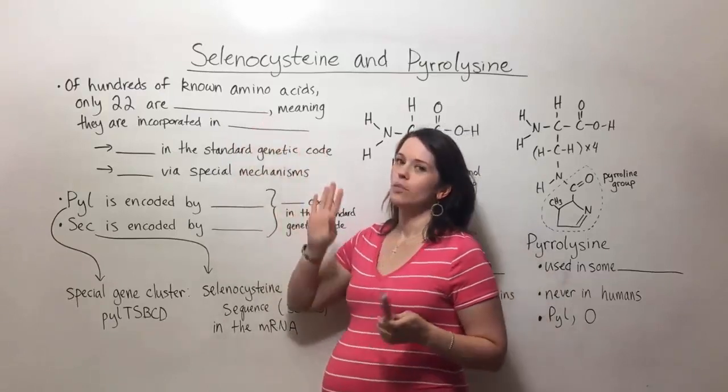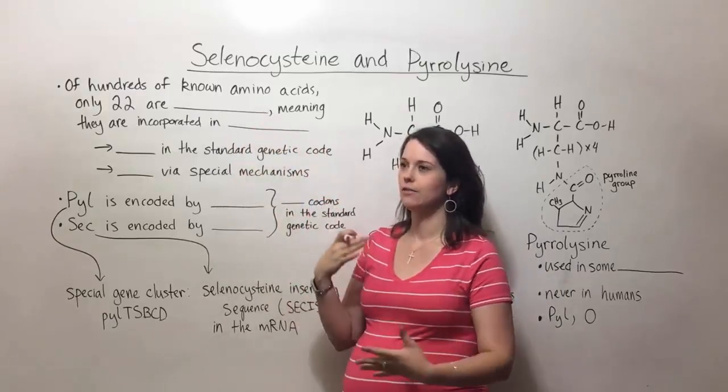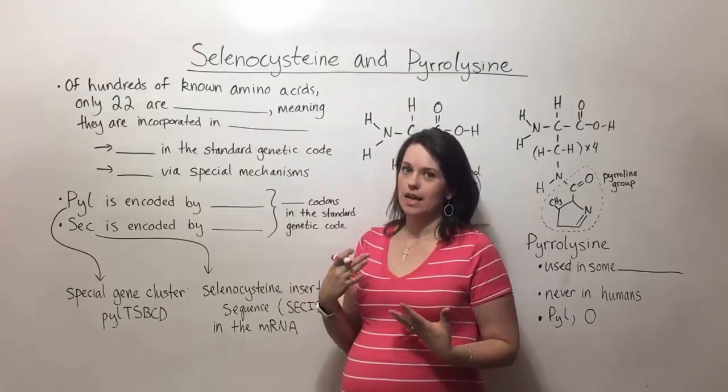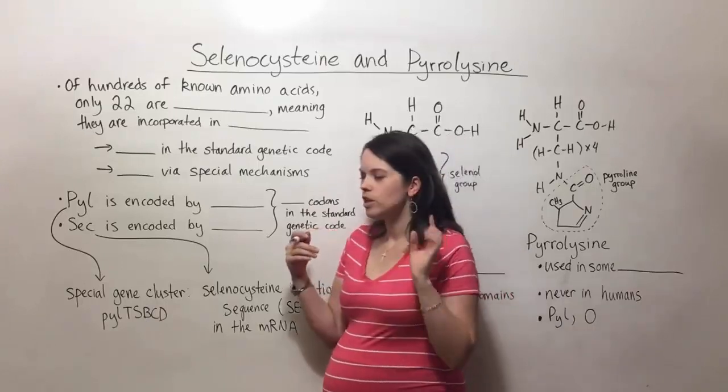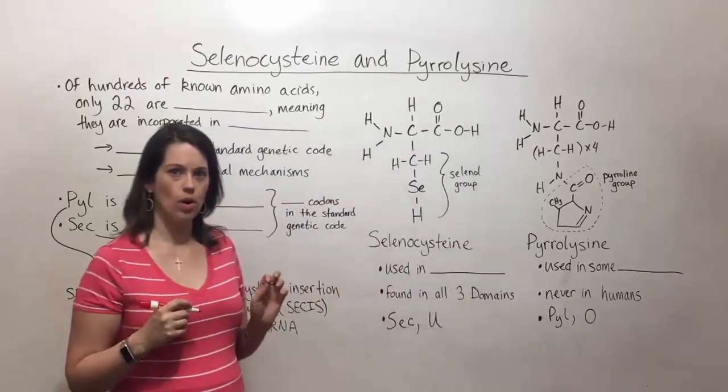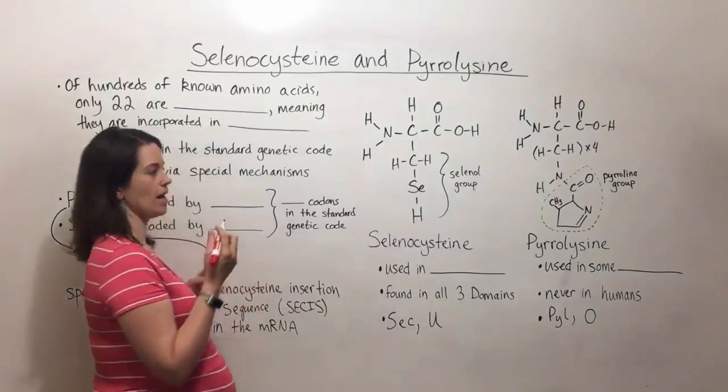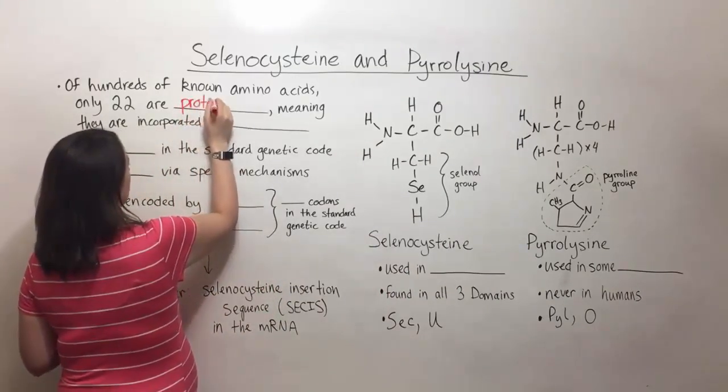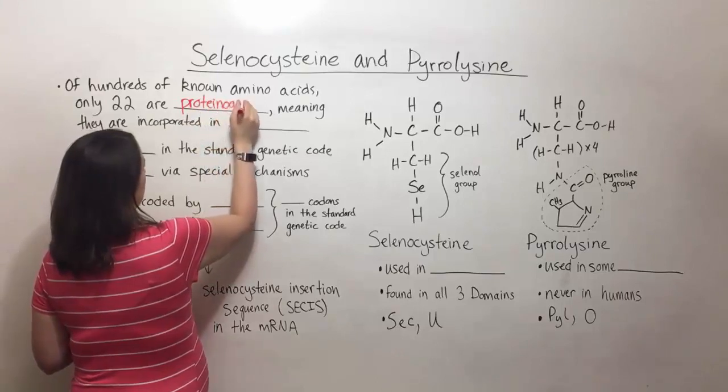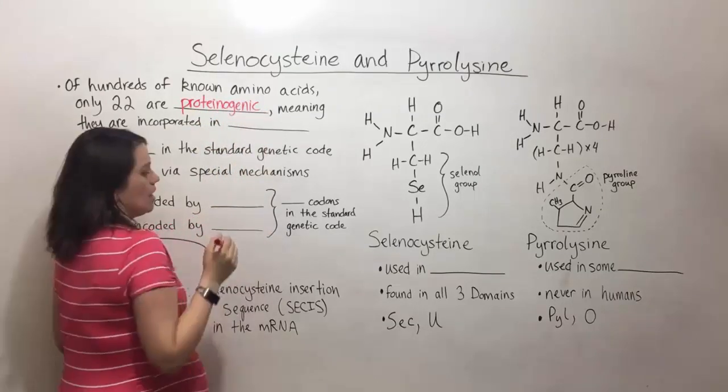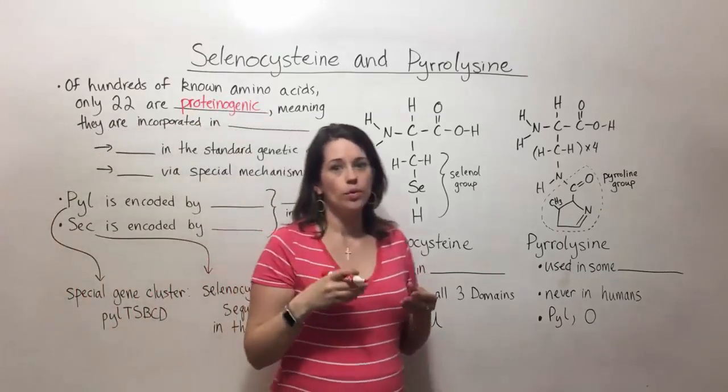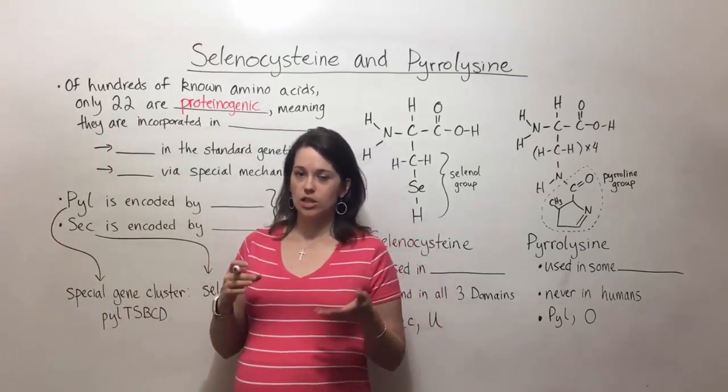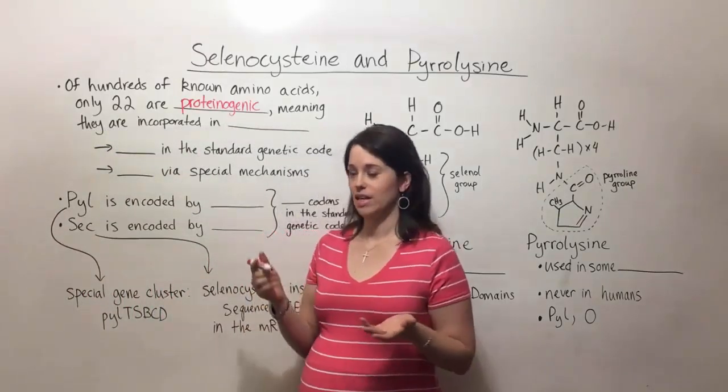Basically there are hundreds of known amino acids that have different functions in biology, but only 22 of them are what is known as proteinogenic. This means that they are incorporated into proteins during the process of translation.